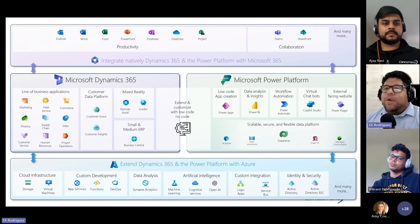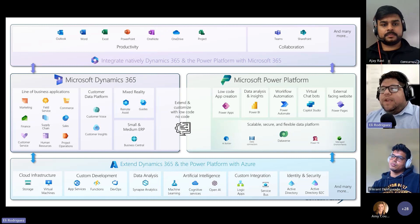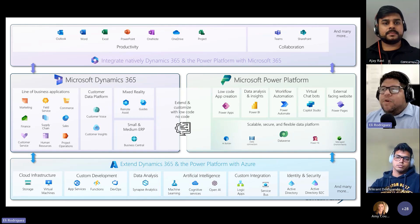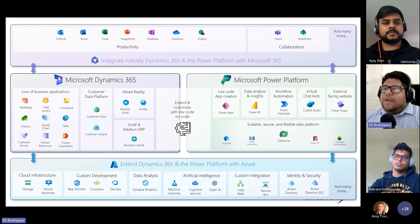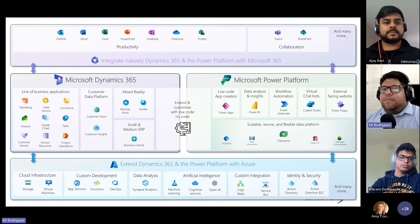This is a simplified image of how the Power Platform works with other components built on the Azure architecture. It can extend the customization of Dynamics 365 environments, work with data sources like Dataverse, SharePoint, SQL Server, Azure services, and external data sources. It allows custom development for pro developers through app services, functions, web APIs, and SDKs. It also natively integrates with the Microsoft 365 stack — your Office, Teams, and SharePoint.